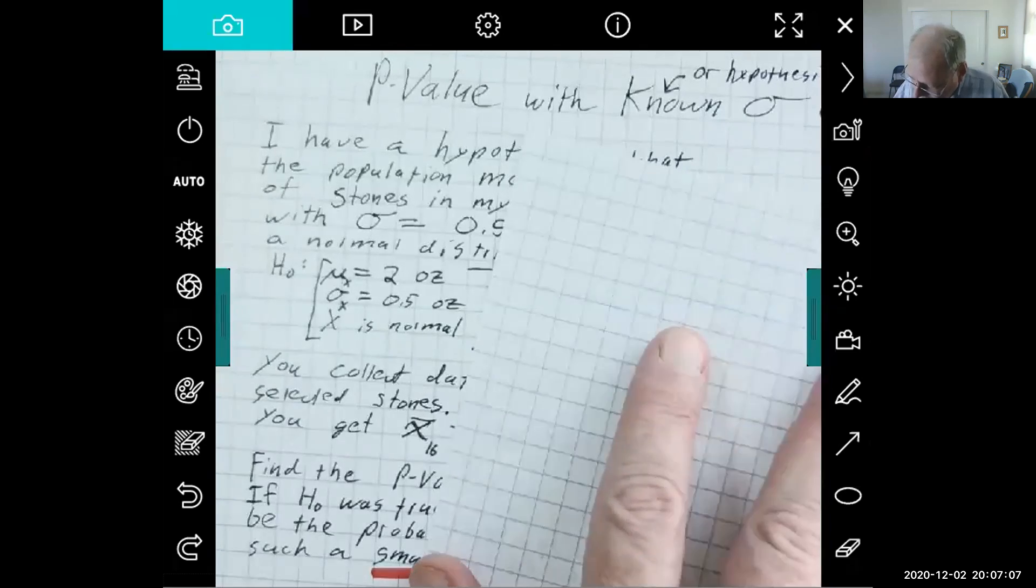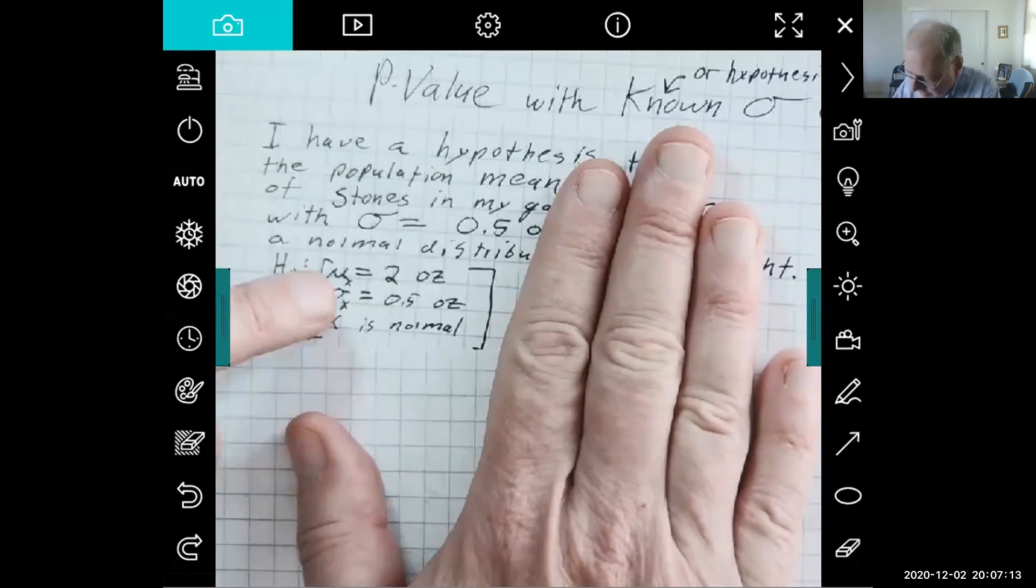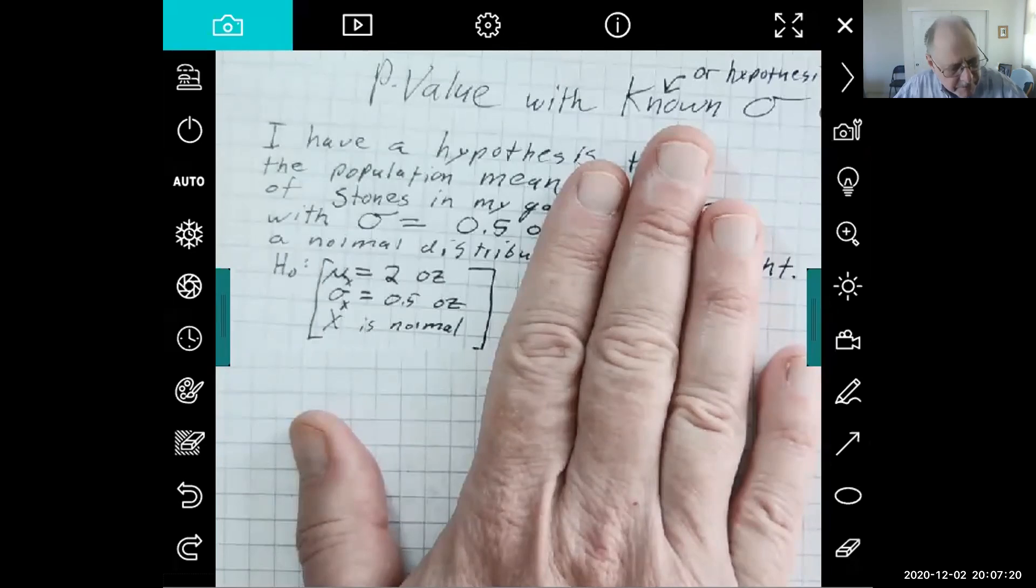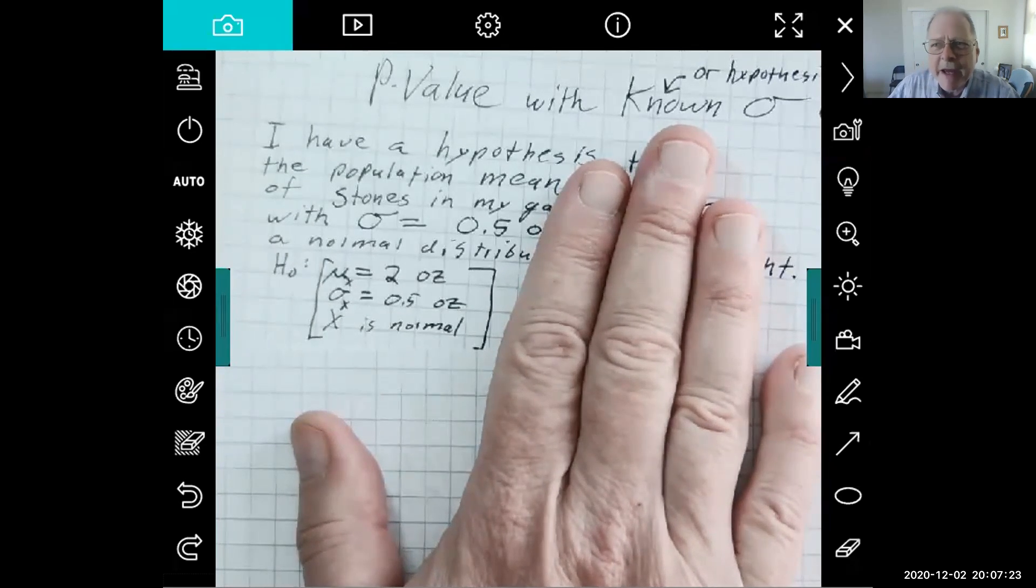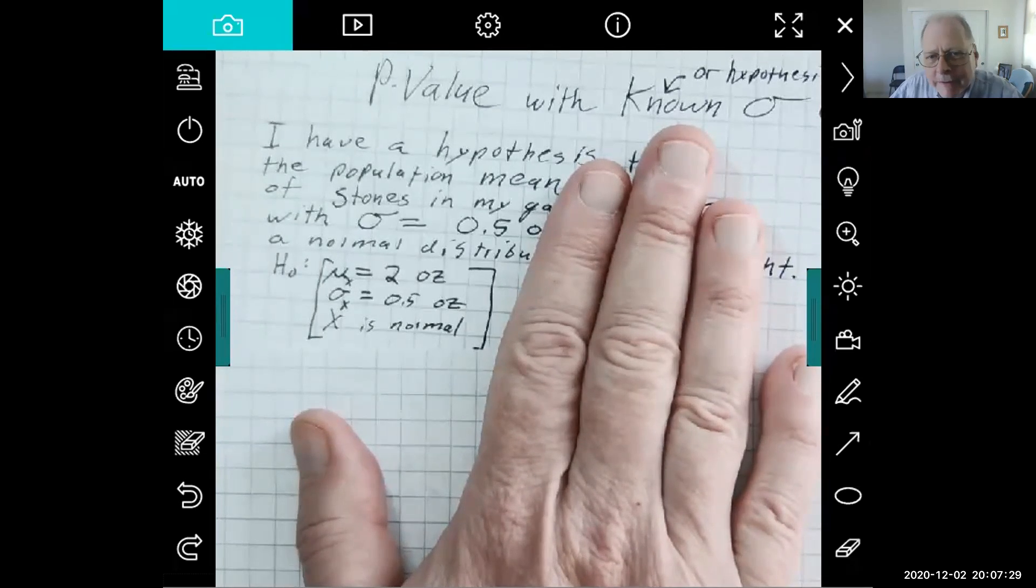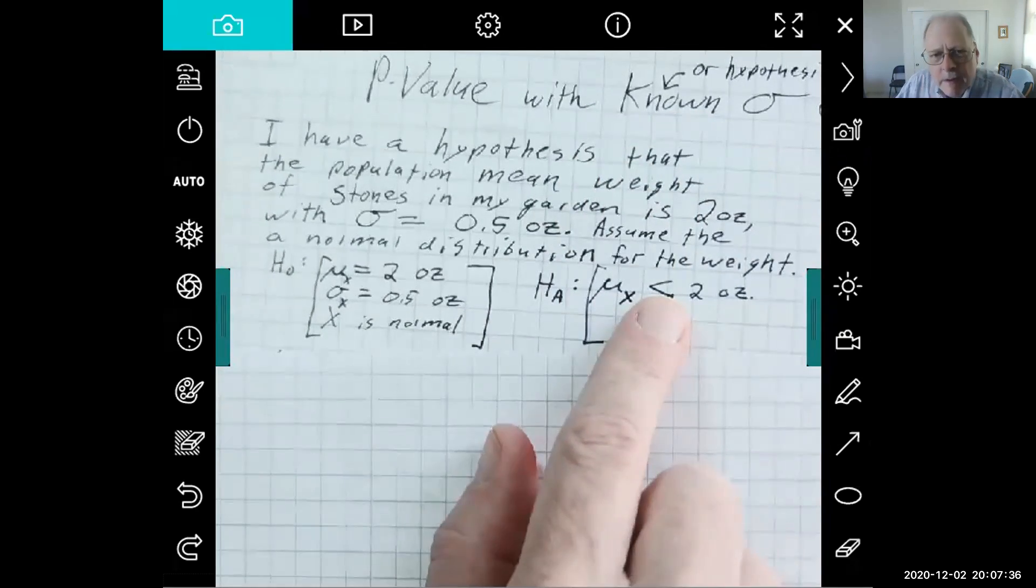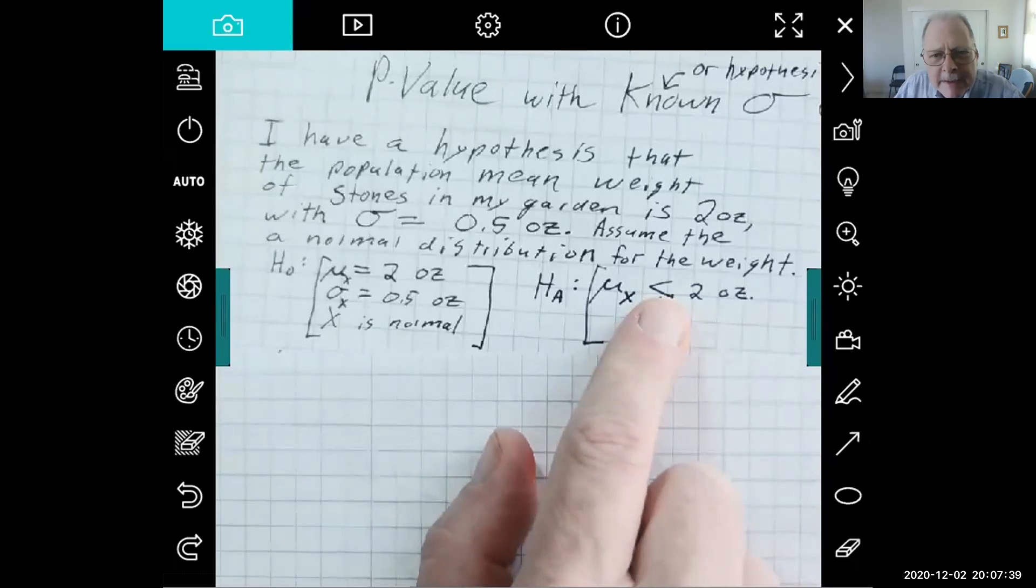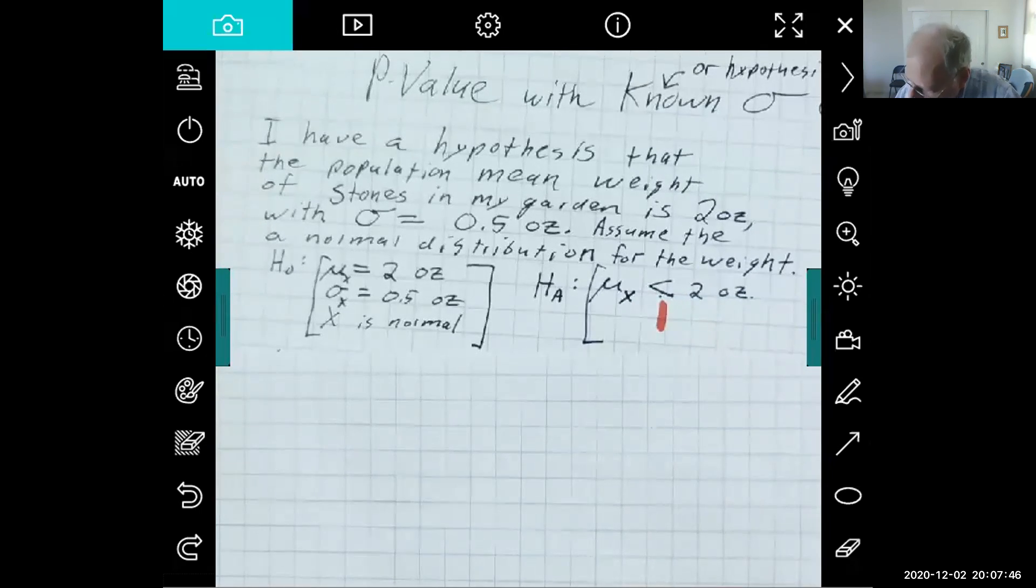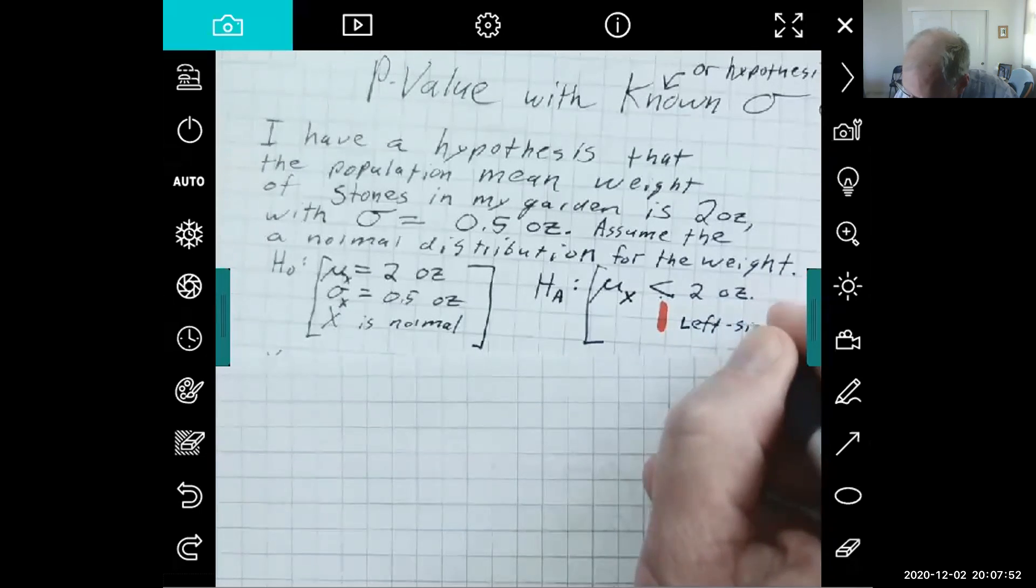So here's my hypothesis. The mean's 2 ounces, standard deviation's half an ounce, the variable's normal. Okay, but then you are thinking, no, you don't believe that. I mean, you figure I probably just made it up—I guess I did. So you think it's probably wrong. So you have this idea that the population mean is less than 2 ounces. So this is a left-sided alternative.